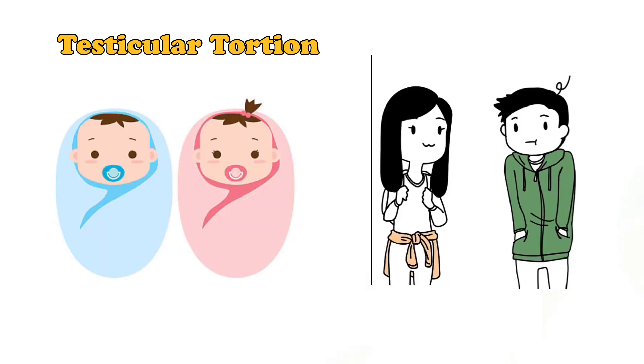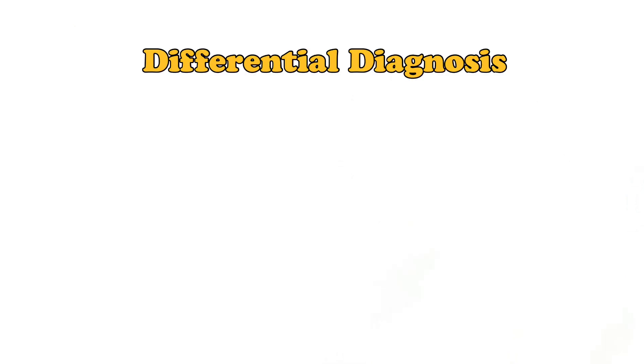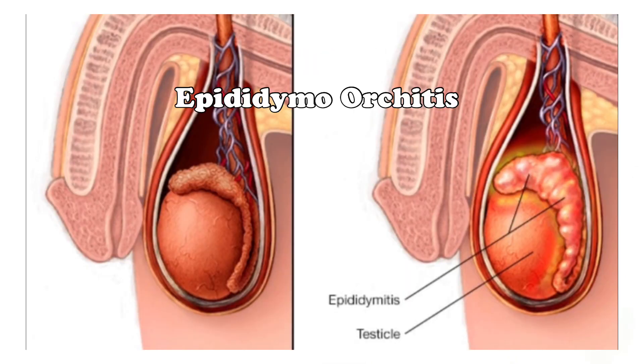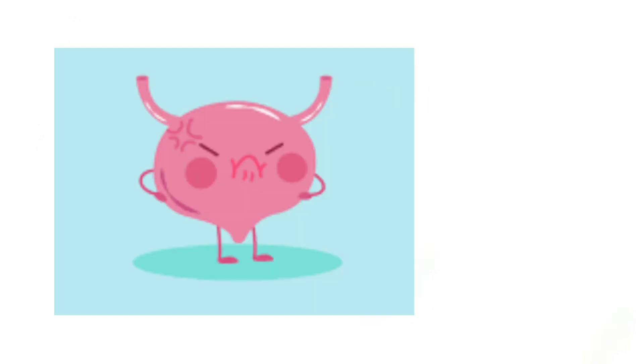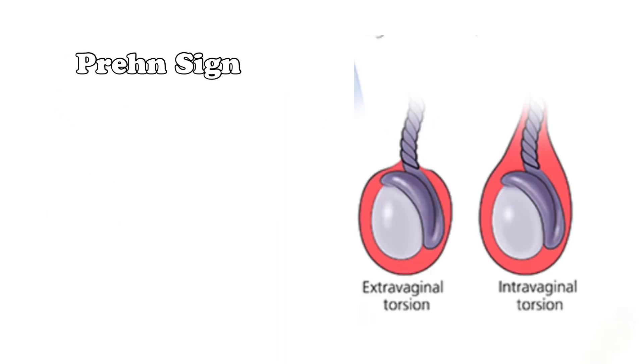The patient will present with acute scrotal pain with swelling. The differential diagnosis can be epididymo-orchitis, but there may be a history of UTI. There are three clinical signs which help us differentiate testicular torsion from epididymo-orchitis: the first sign is the Brain sign, the second is the Deming sign, and the third is the Angel sign.